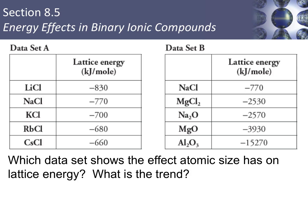Pause the video and look at the data sets — which one shows the effect of atomic size on lattice energy, and what is the trend? Data set A shows the effect atomic radius has on lattice energy. All of the metals are alkali metals listed from smallest to largest atomic radius, and the magnitude of the lattice energy decreases as we go from smallest to largest. This goes back to Coulomb's Law: the smaller the distance between charged particles, the stronger the force of attraction. Lithium chloride has the largest lattice energy because the force of attraction between lithium and chlorine is the strongest.